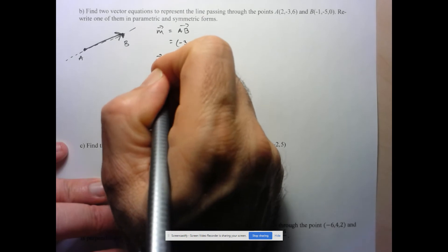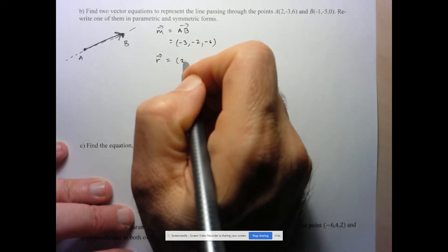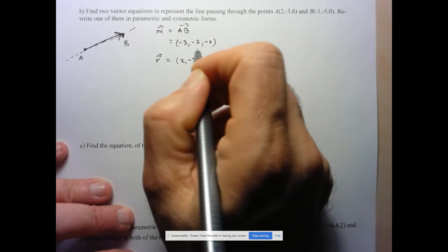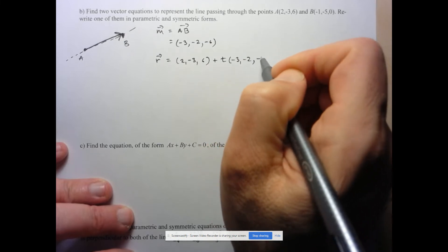So one of the equations that I could write is, well, let's say I start with this first point. So 2, negative 3, 6, plus any multiple of my direction vector, negative 3, negative 2, negative 6.